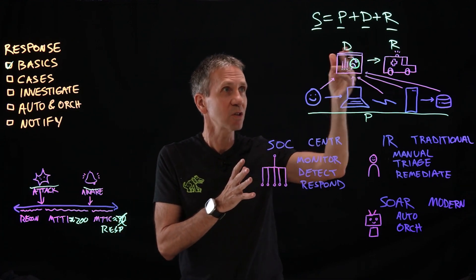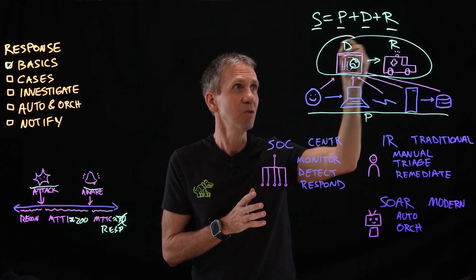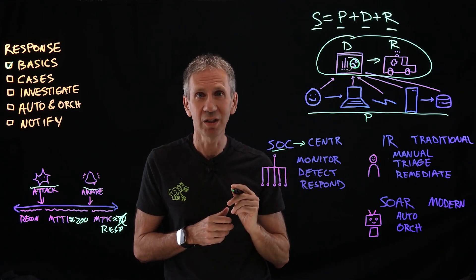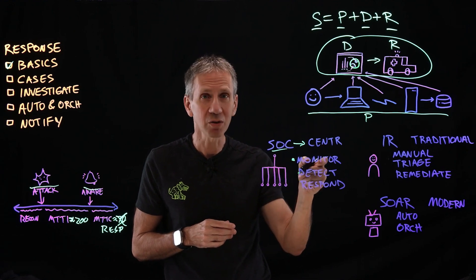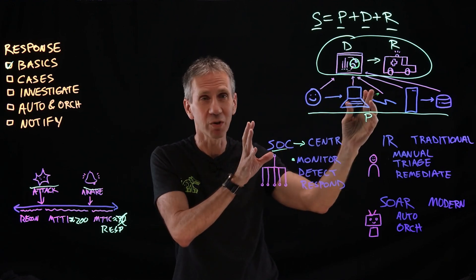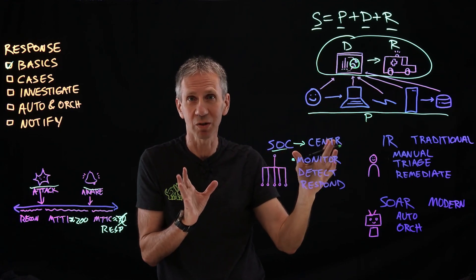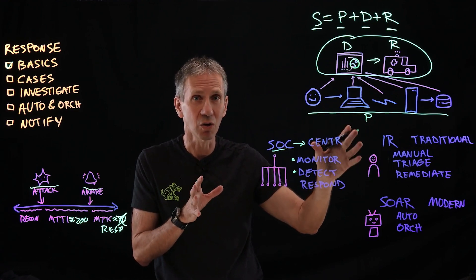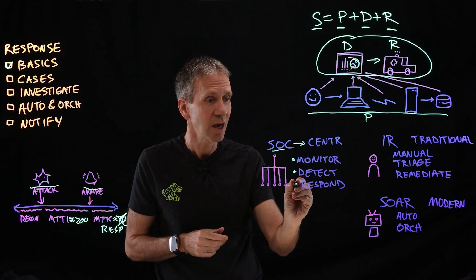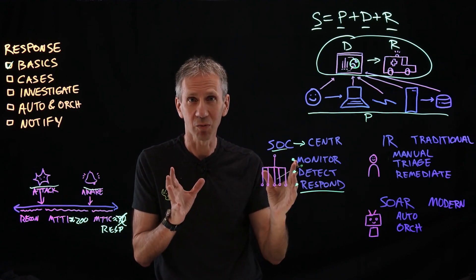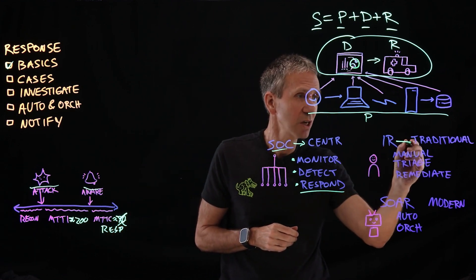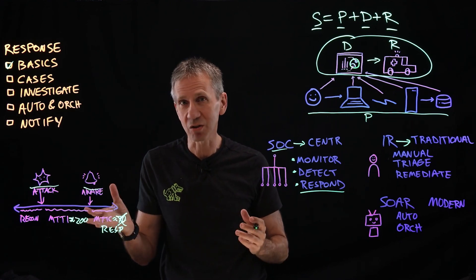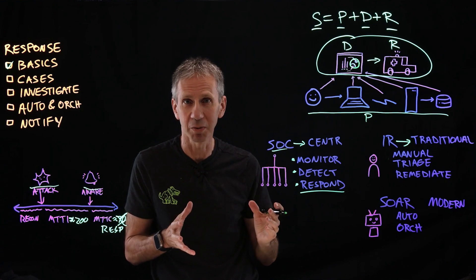The group doing this monitoring is what we call the SOC — the Security Operations Center. It's a centralized team whose job is to monitor across all the different domains, which send their information up so we can see what's going on. We detect anomalous behaviors, alerts, and things like that, correlate all of that, and then respond. That response has traditionally been called incident response, or IR. One of the big things that can cut the cost of a data breach is having a good incident response capability in place.